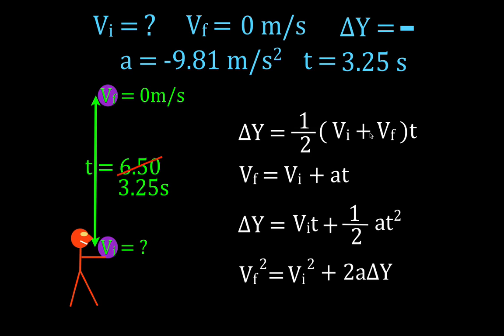Now you'll notice this equation has the initial velocity. We know the final. We know the time. But we don't know the change in position. So we cannot use this equation. You'll notice the other equations have the initial velocity in them. But this equation and this equation also have the change in position. We don't know the change in position. We can't use this one. We can't use this one.